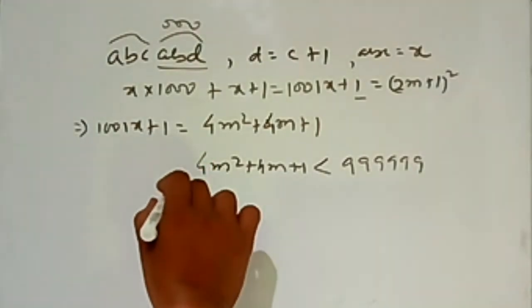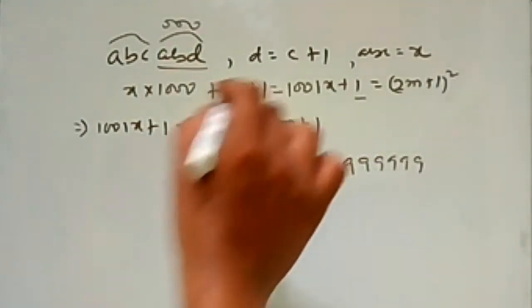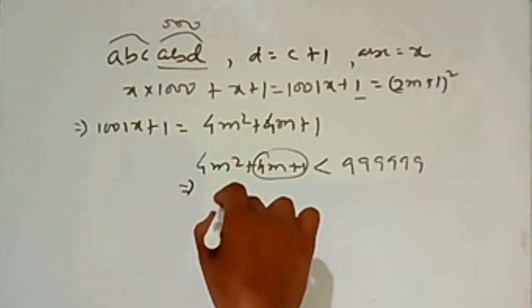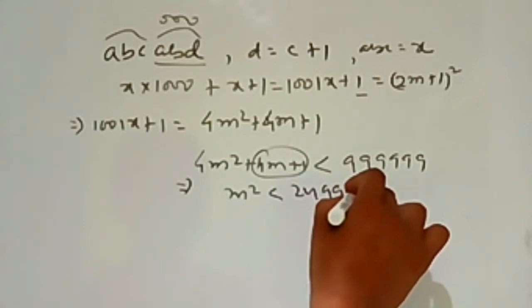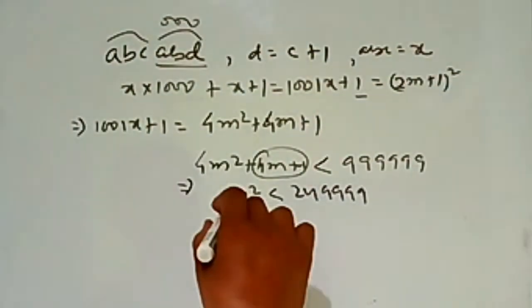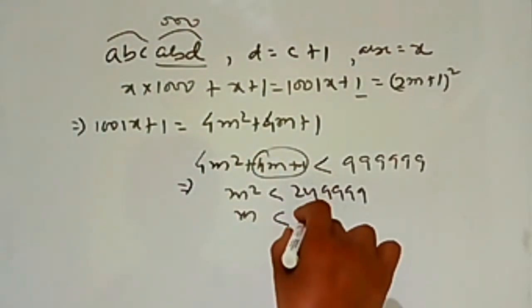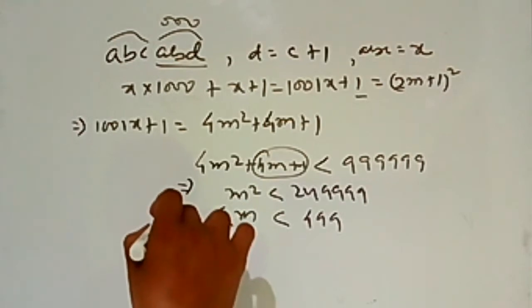Since it is a six-digit number, we get the constraint that 4m² + 4m is less than or equal to the six-digit upper bound. Simplifying, m² is less than or equal to 249,999, so m is less than or equal to 499. By the same process for the lower bound, we get m is greater than or equal to 158.